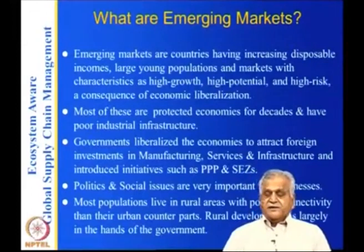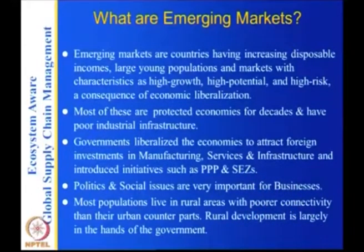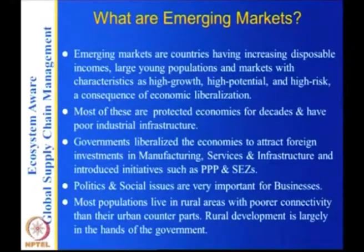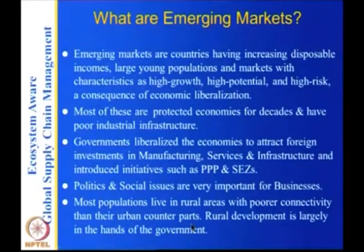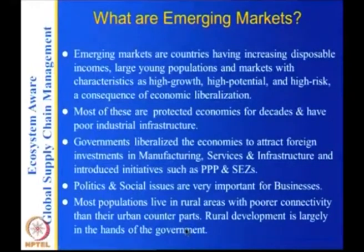If you take a country like India, you have 1.2 billion population — 400 million people live in urban areas and 800 million in rural areas. Rural areas have poorer connectivity than urban counterparts, and rural development is largely in the hands of the government. If you want to develop roads, telecom infrastructure, water infrastructure, or any SMEs (small and medium enterprises), the government has to do it, because private companies are afraid to enter rural areas where infrastructure is low and the population is not well educated.